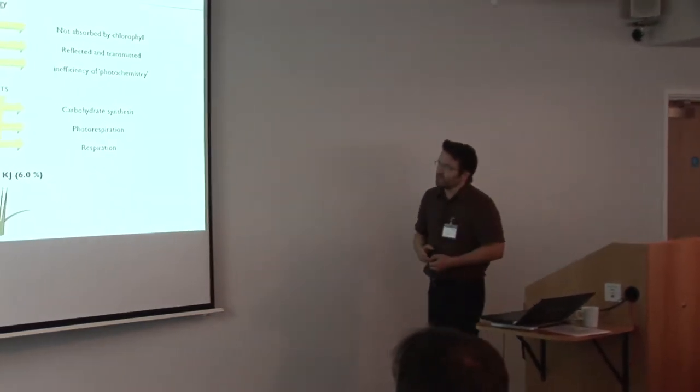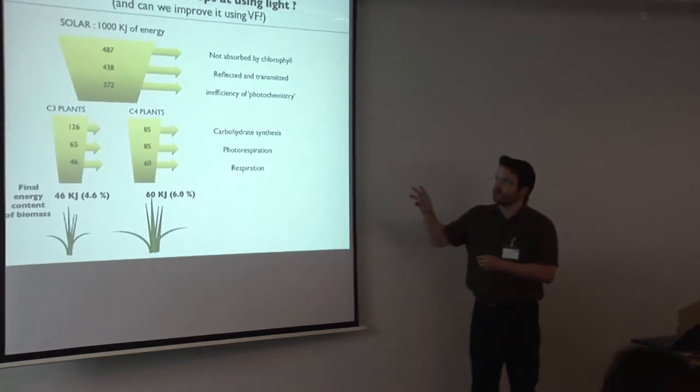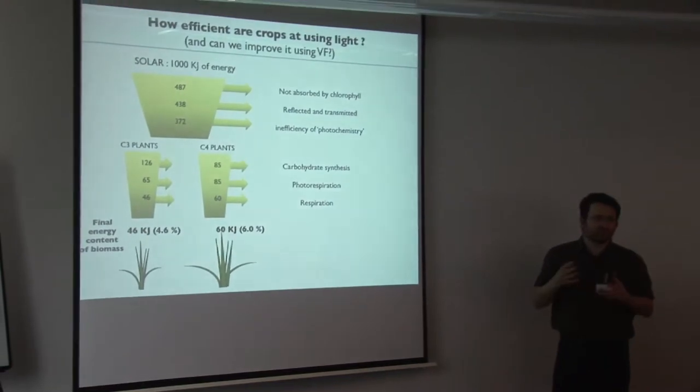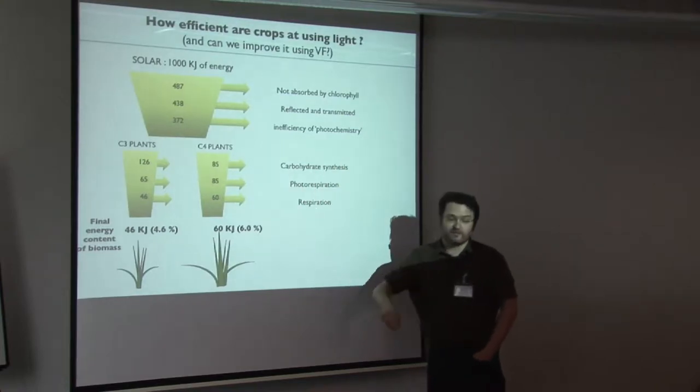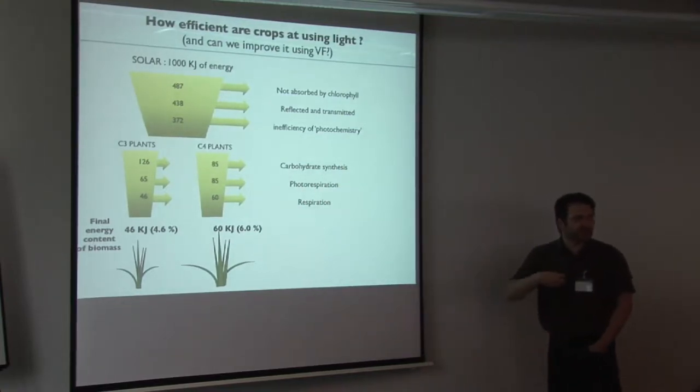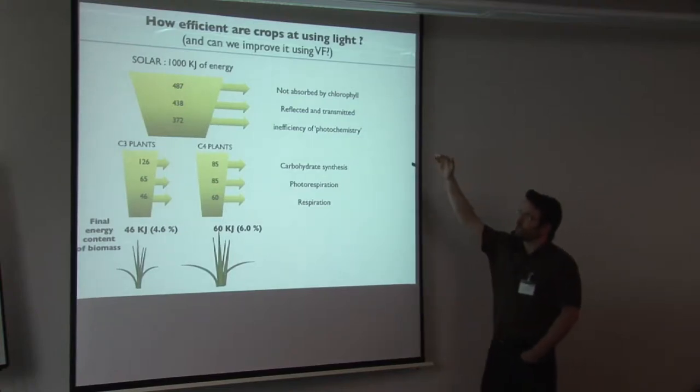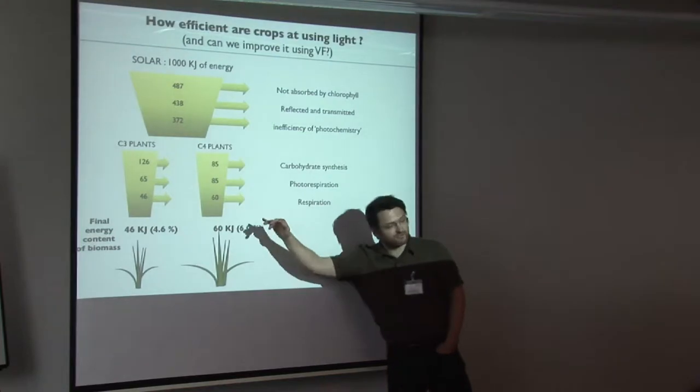So I just wanted to explain one thing about why vertical farming systems are so interesting for someone who works on photosynthesis, and it's all about control of resources. If you think here, we have a thousand kilojoules of energy, solar energy, arriving at the top of the crop. We can look at the number of losses that you go through before you finally get to the efficiency, the energy content of the biomass left at the end.